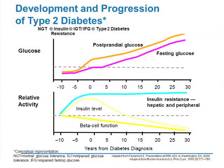No talk on diabetes would be complete without this particular slide. The upper graph shows the consistent rise first in postprandial sugars and then fasting sugars. Insulin resistance is present very early on. In an effort to overcome it, the beta cell starts to produce more insulin. At a point where the beta cell can no longer produce more, you start to see the decline in insulin level, and that's when postprandial and then fasting sugars start to rise. This loss of beta cell ability is a continuum — beta cell loss is inexorable and they will end up on insulin.